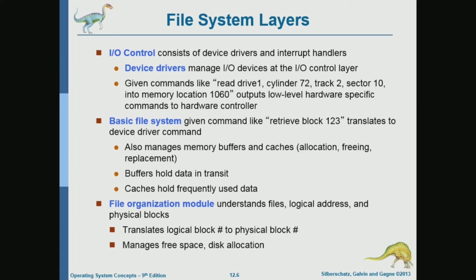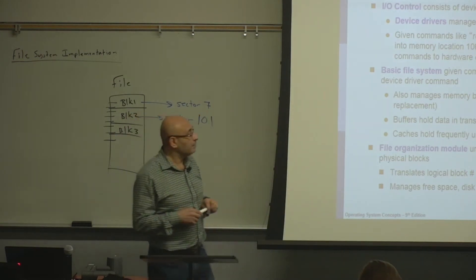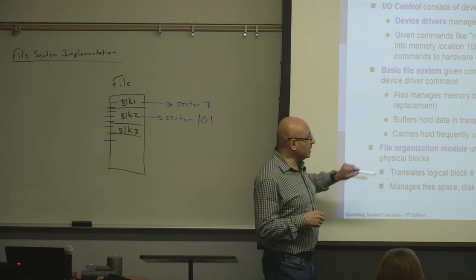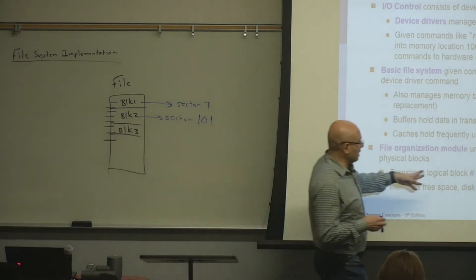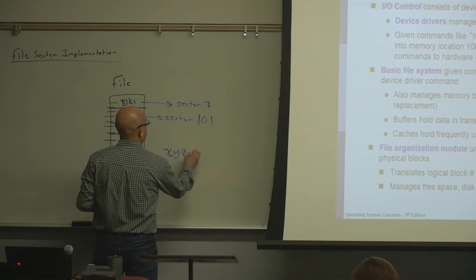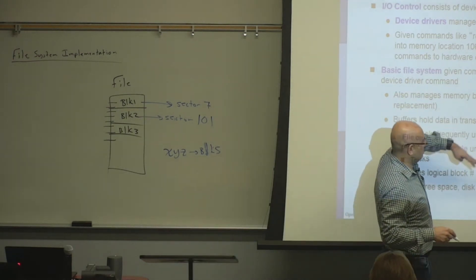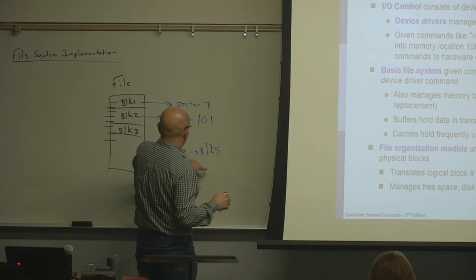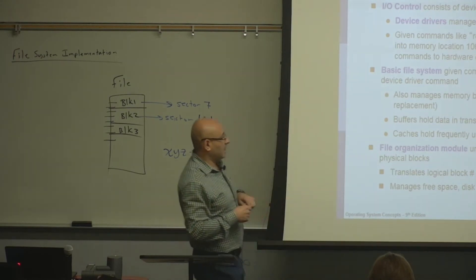On top of that is the file organization layer. You may have noticed that the I/O control and basic file system layers don't have the notion of a file — they know about blocks. The file organization layer knows about files and translates logical blocks into physical blocks. A logical block means, for example, block number five in file XYZ, which gets mapped to some physical block number and the command is sent to the lower layer.